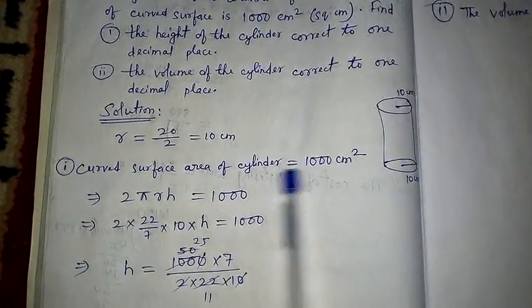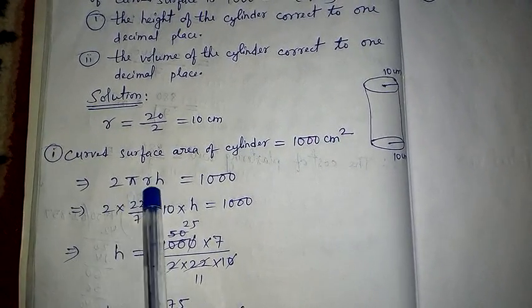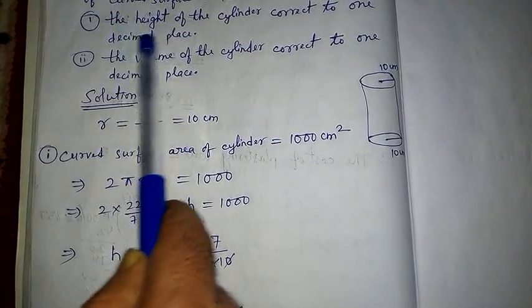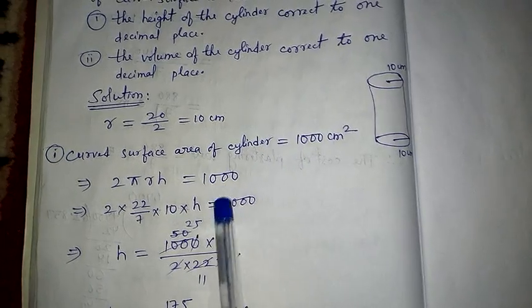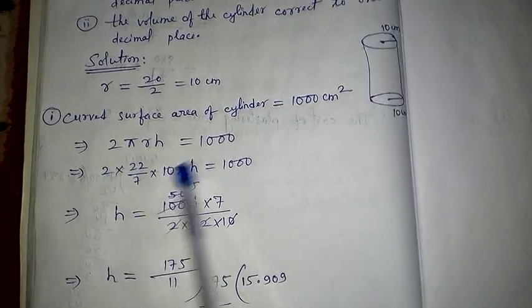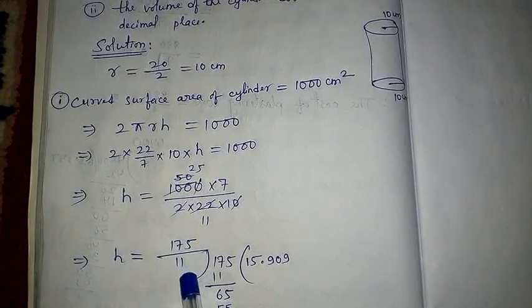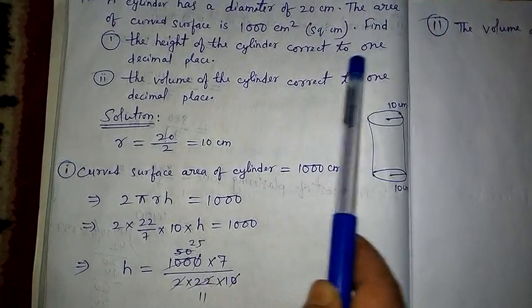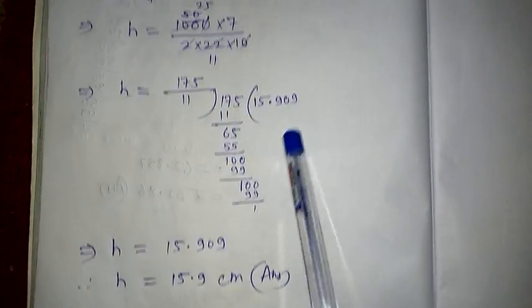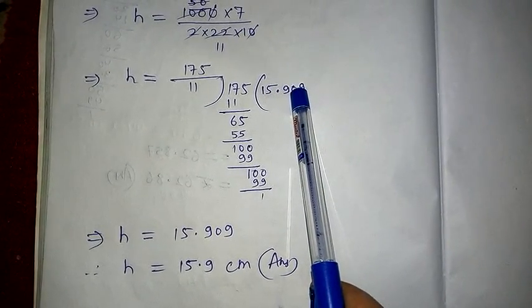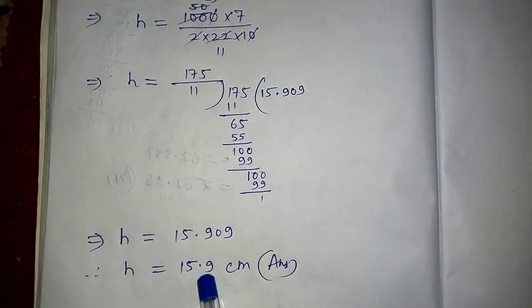Curved surface area = 1000 centimeter square. Using the formula 2πrh = 1000, putting values: 2 × (22/7) × 10 × h = 1000. Making h the subject, h = (1000 × 7) / (2 × 22 × 10) = 175/11. After division, h = 15.909. Since the question demands one decimal place, and the digit after the first decimal is 0 (less than 5), the answer is 15.9 centimeter.